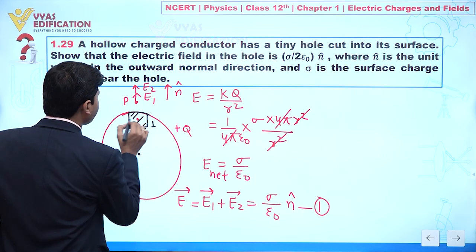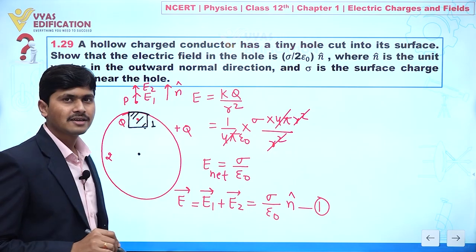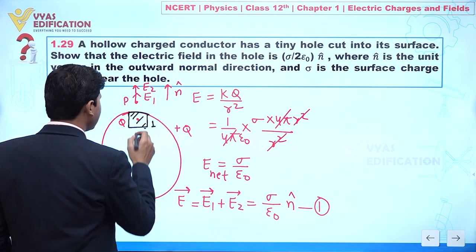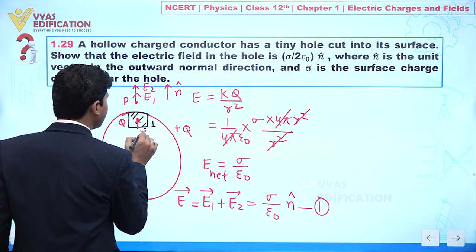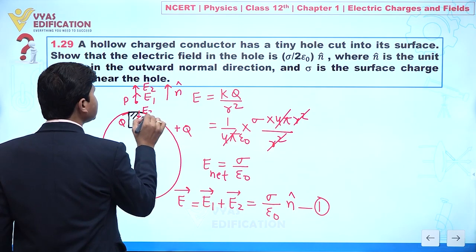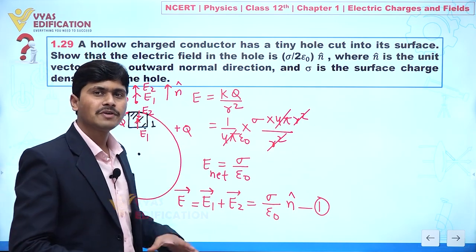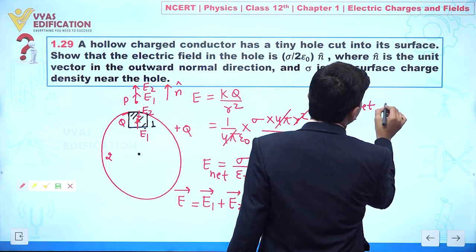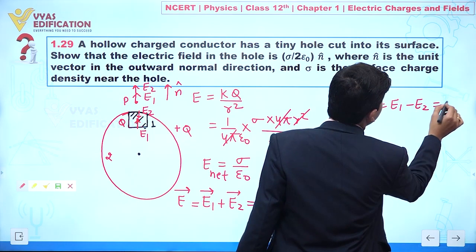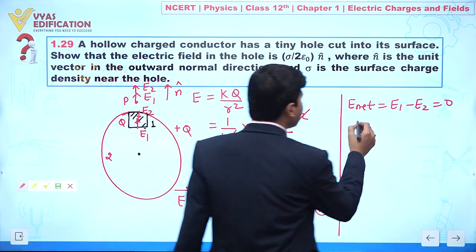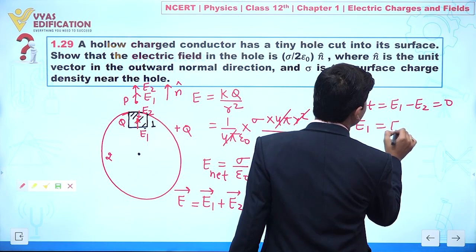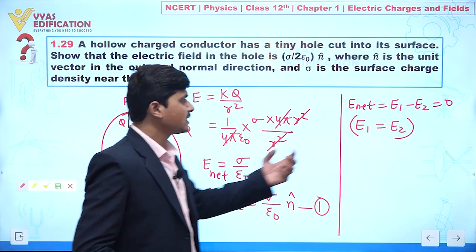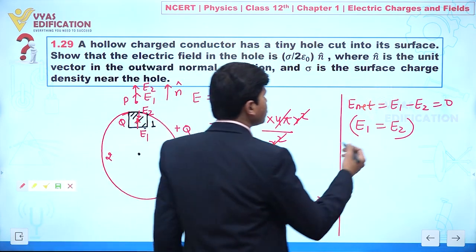Now consider a point Q inside the conductor. We know that inside a conductor the net electric field is always zero. Here E1 and E2 are in opposite directions, so E1 − E2 = 0, which gives us E1 = E2. We will use this relation with Equation 1.